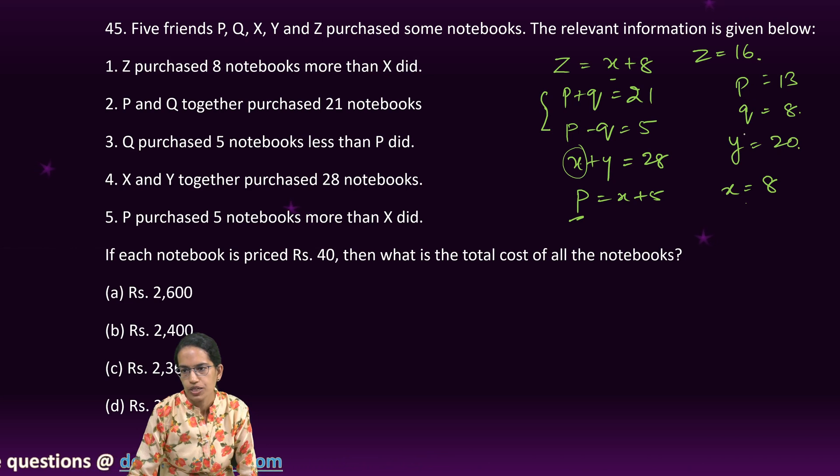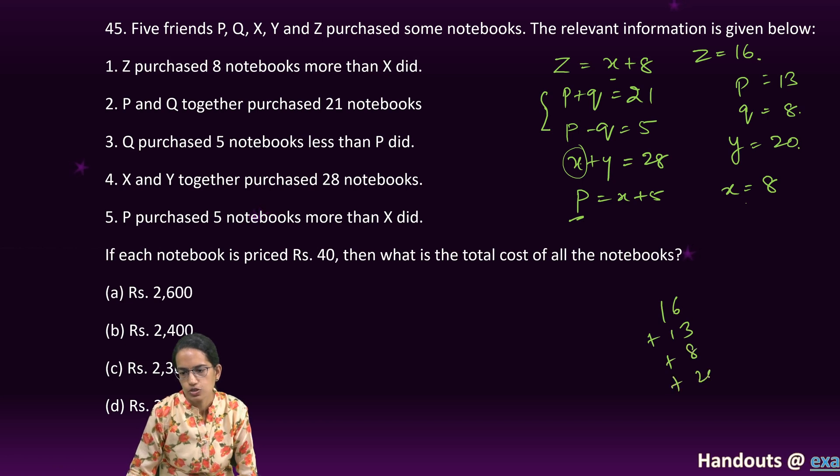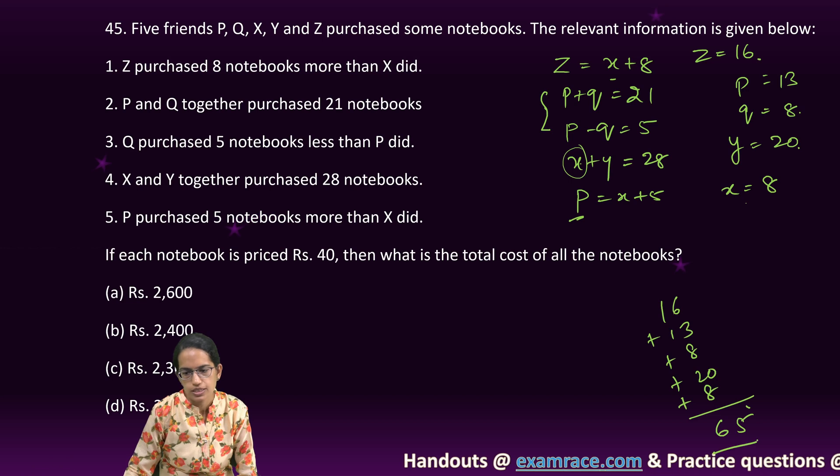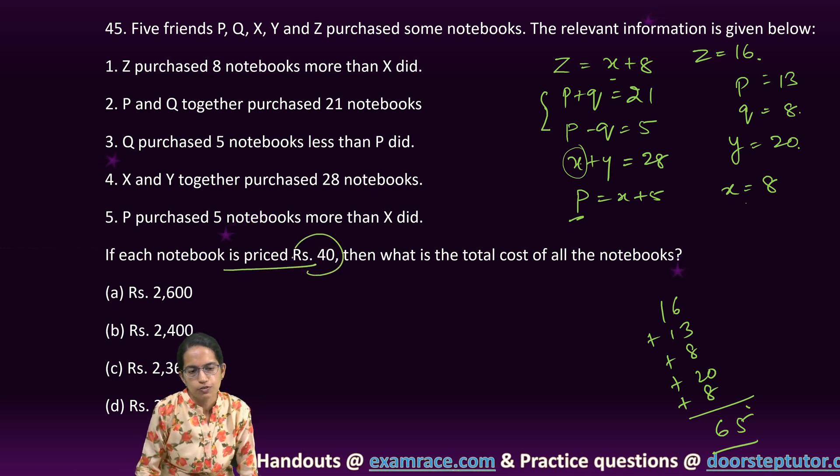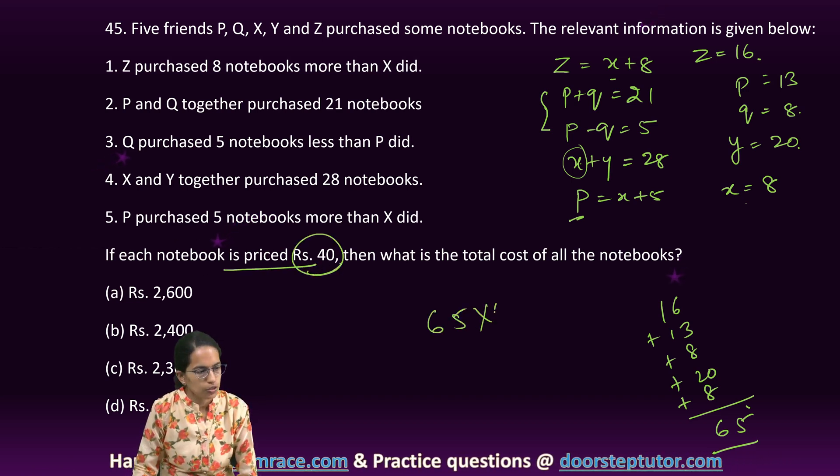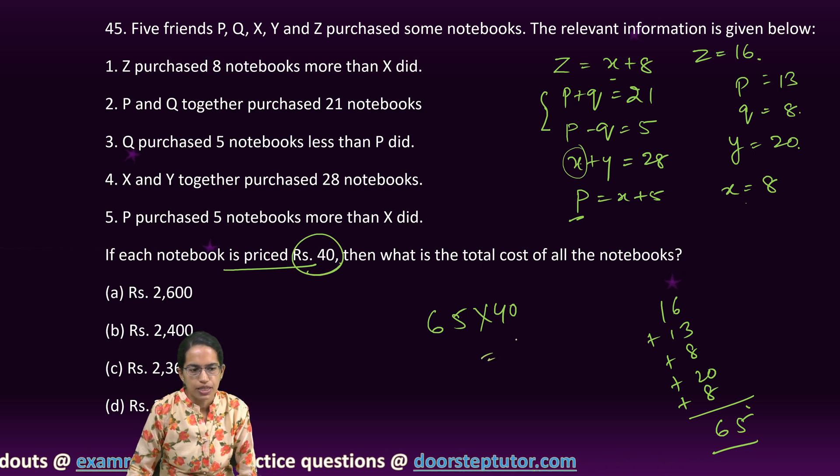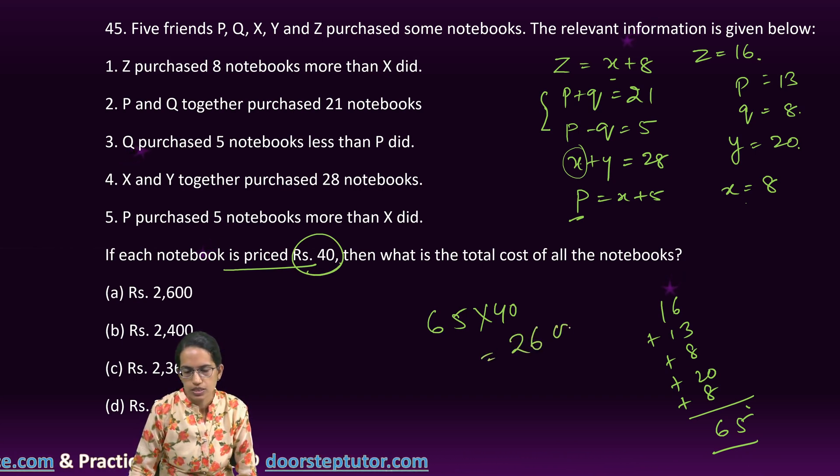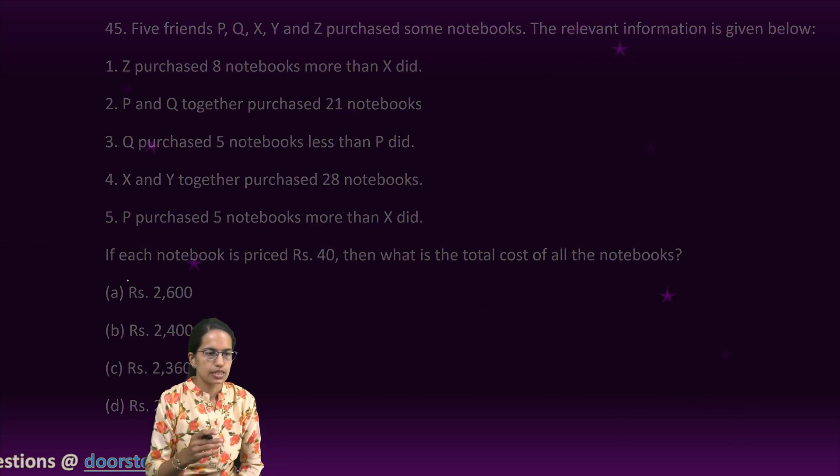Now I have p, q, x, y and z. So I add up simply 13 plus 16 plus 8 plus 20 plus 8. And that gives me 65. Now each notebook is 40. So 65 into 40. That means 2600 is the cost and that's the right answer here.